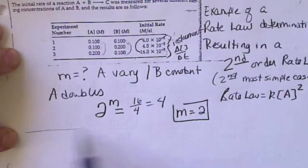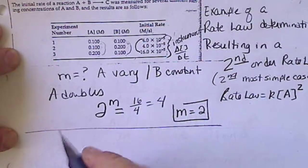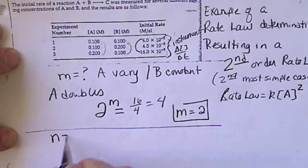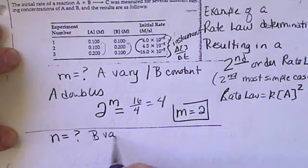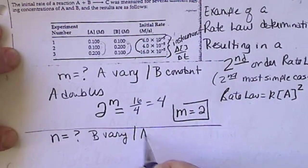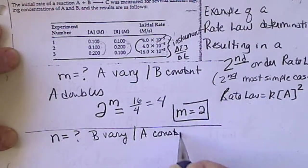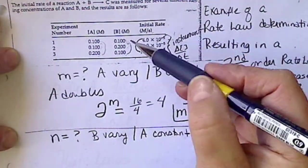Now, I've got that figured out, so now I need to determine what the exponent on B equals. So, now B has to vary and A has to remain constant.